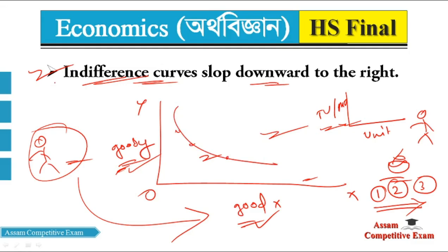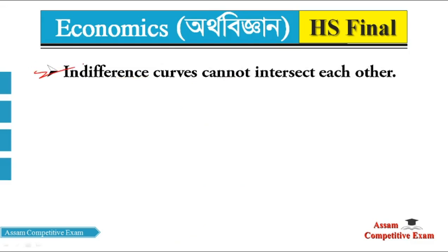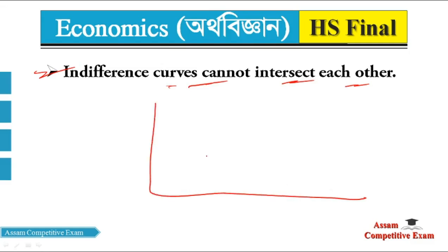Now, for the first characteristic: indifference curves slope downward to the right. For the second characteristic: indifference curves cannot intersect each other. Two indifference curves cannot cross one another. This is mentioned specifically — it would be a mistake if they did intersect.